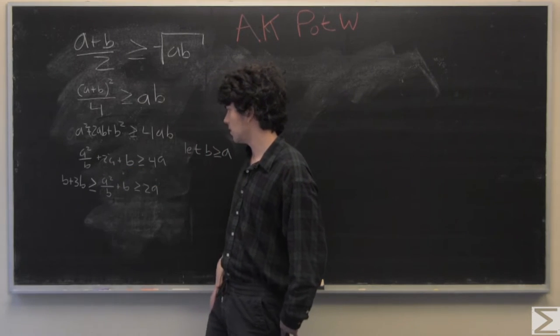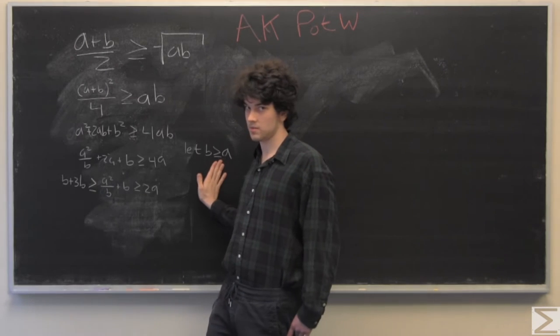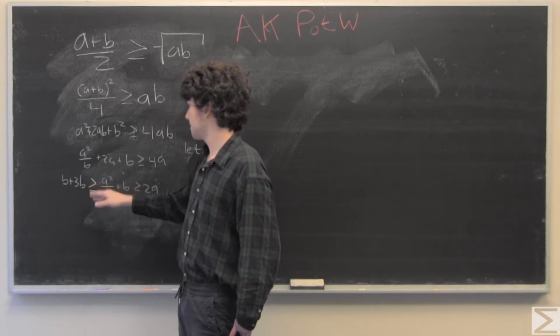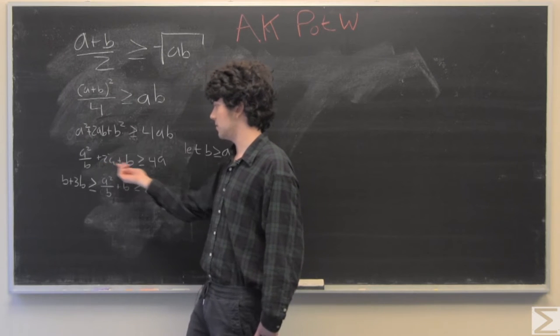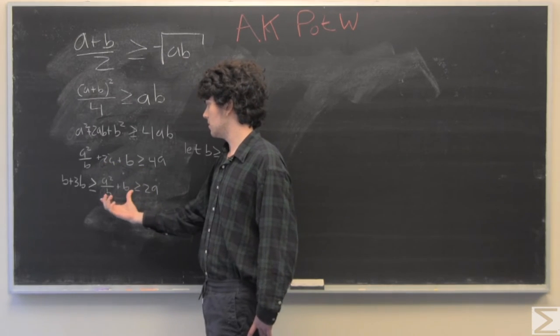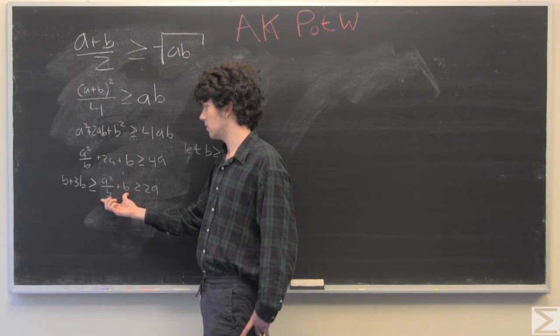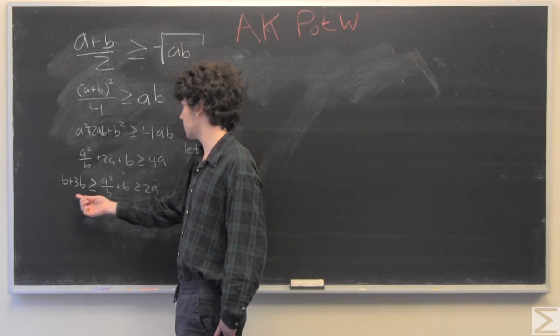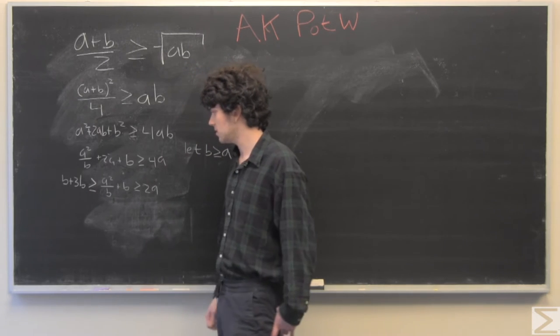So on the right-hand side here, we have 4a is less than or equal to a squared over b plus 2a plus b. And since we know that b is greater than a, this will become b plus 3b. So this expression is simplified. So 4b is greater than or equal to 2a, which is correct.